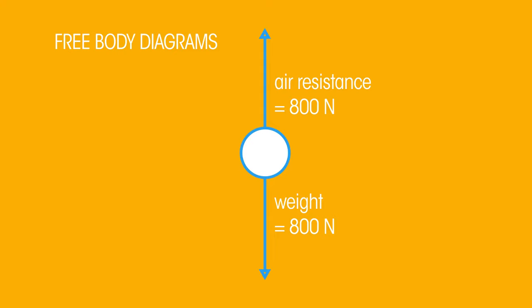In a free body diagram, the object is shown as a point. The forces are drawn as arrows starting at the point. The length of the arrow indicates the magnitude of the force and the direction of the arrow shows the direction of the force.